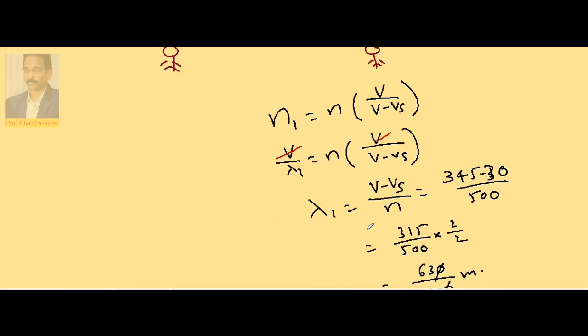In the similar way if I proceed with N2, the same equation if I repeat it—the source is moving away, so it is 345 plus 30 by 500. So 375 by 500.